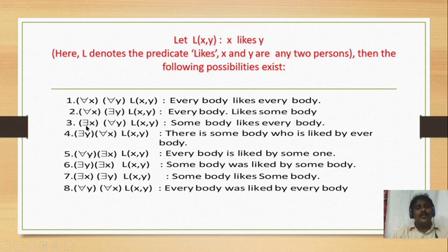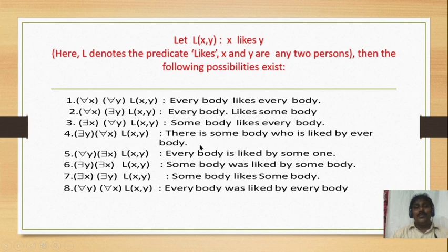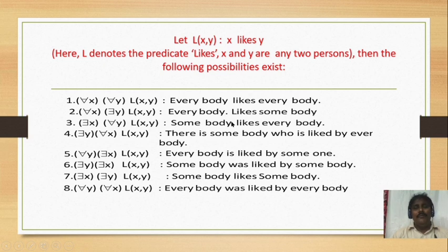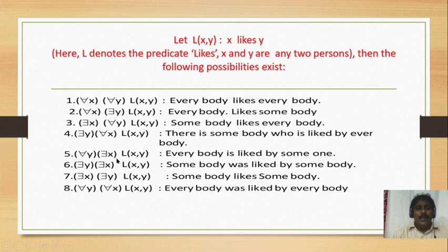Third: ∃x ∀y l(x, y) means somebody likes everybody — there exists x (existential) and for all y (universal). Fourth: ∃y ∀x l(x, y) means there is somebody who is liked by everybody — there exists y (somebody) and for all x (everybody).